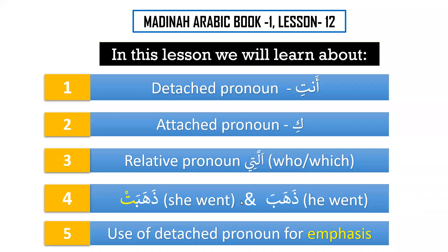For the past tense, the masculine form is zahaba, meaning 'he went.' When you want to talk about a singular feminine, we say zahabat — 'she went.' The difference is the addition of ta-as-sakin, making it zahabat. Also, we will see that sometimes the detached pronouns can be used for the purpose of emphasis.